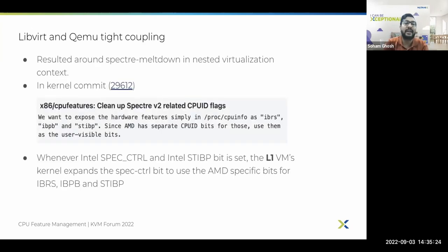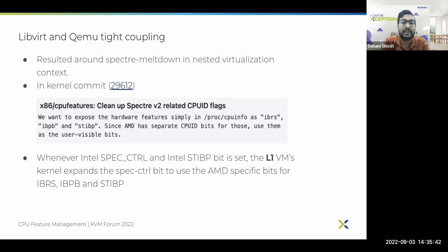The next issue is the tight coupling between libvirt and QEMU versions. The example here arises around the Spectre/Meltdown timeframe in a nested virtualization context. A kernel commit causes the kernel, whenever the Intel specCTRL and Intel STIBP flags are set, to expand the specCTRL bit using AMD-specific bits for IBRS and IBPB, and the Intel STIBP bit to use the AMD-specific STIBP bit.